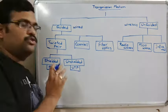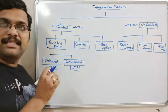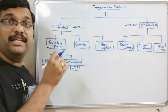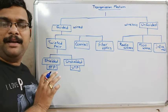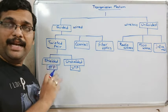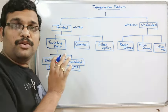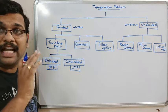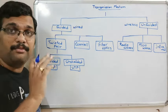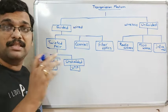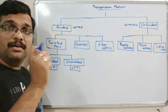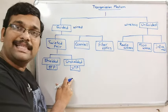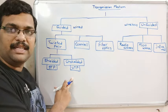UTP is inexpensive and very easy to install. However, the data rate is low — the transmission of data from one system to another system will have a lower data rate for unshielded twisted pair.